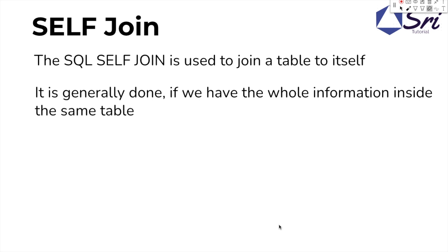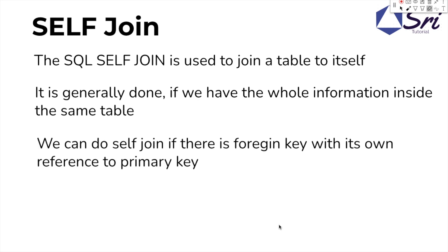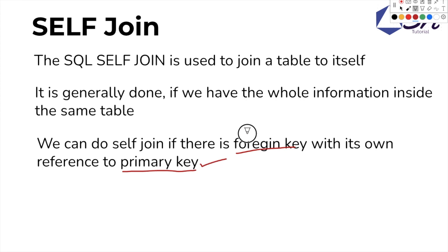The second point: self-join is generally done if we have the whole information inside the same table. We can do a self-join if there is a foreign key with its own reference in the primary key. So we have two keys — first, the foreign key, and second, the primary key. In that table, the primary key is also referenced by the foreign key. This is practical — I will show you in the next slide.